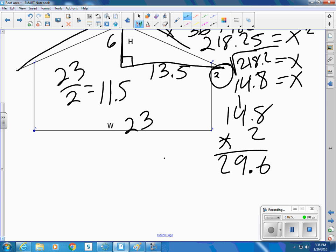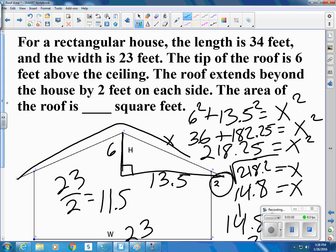And then we can multiply. That's pretty much the width of the surface that we're covering. And then the length of the surface that we're covering is the length of the house plus 2 on each side. So plus 4. So it's 34 feet plus 4 would be 38 feet.